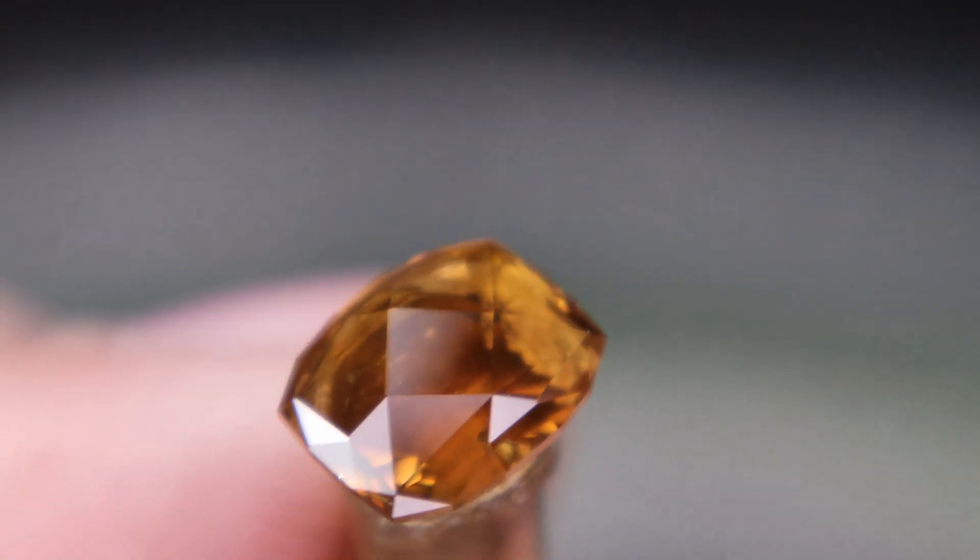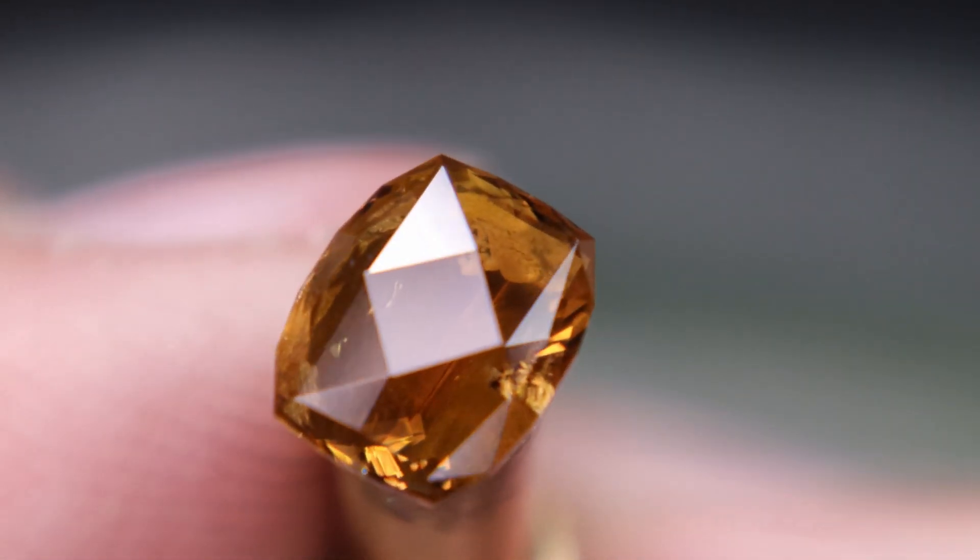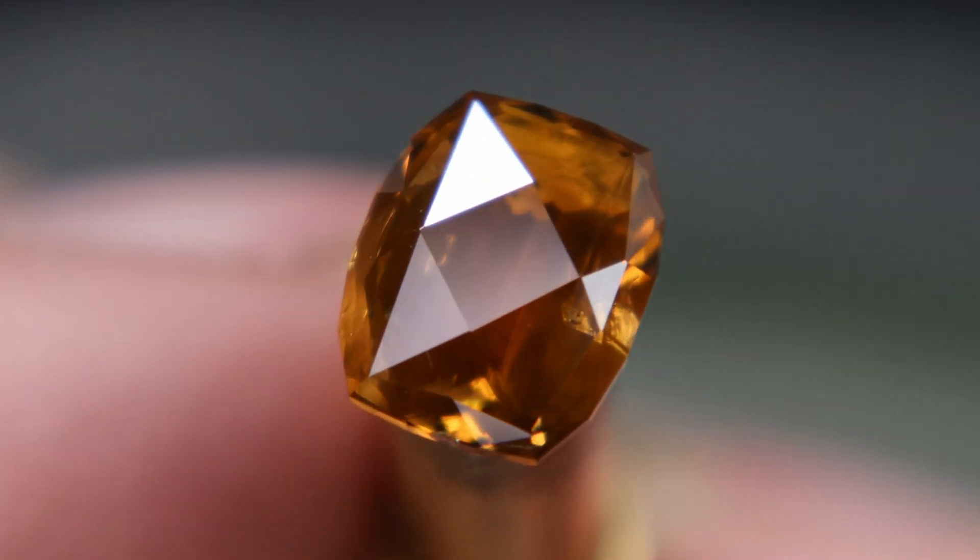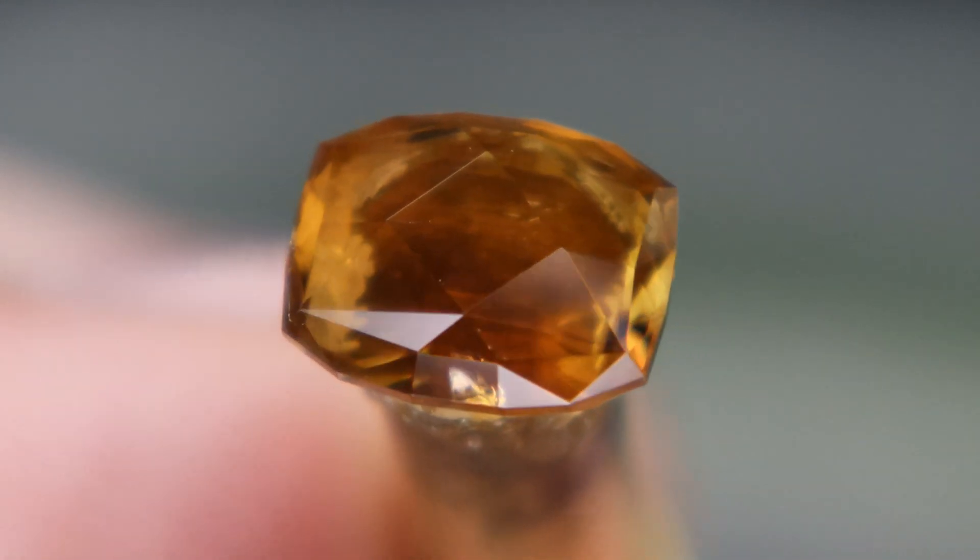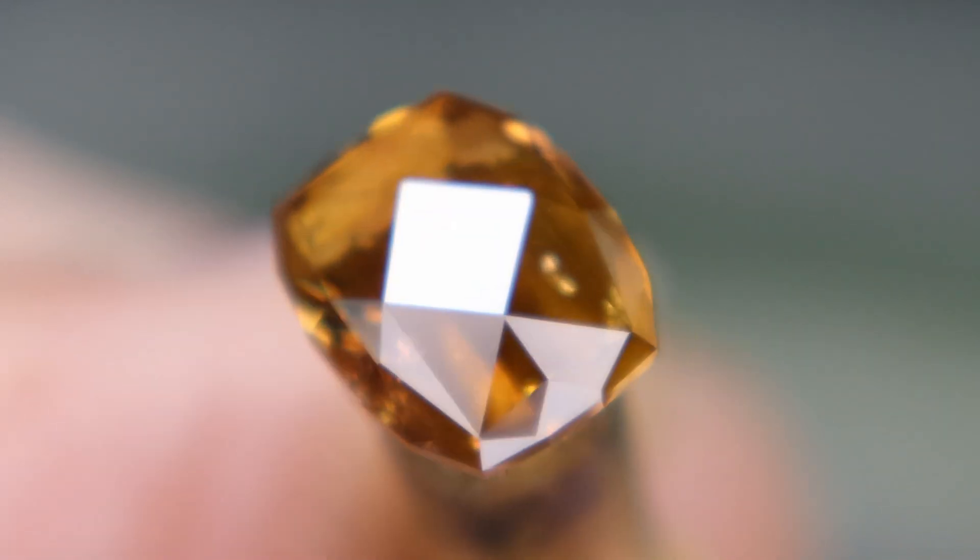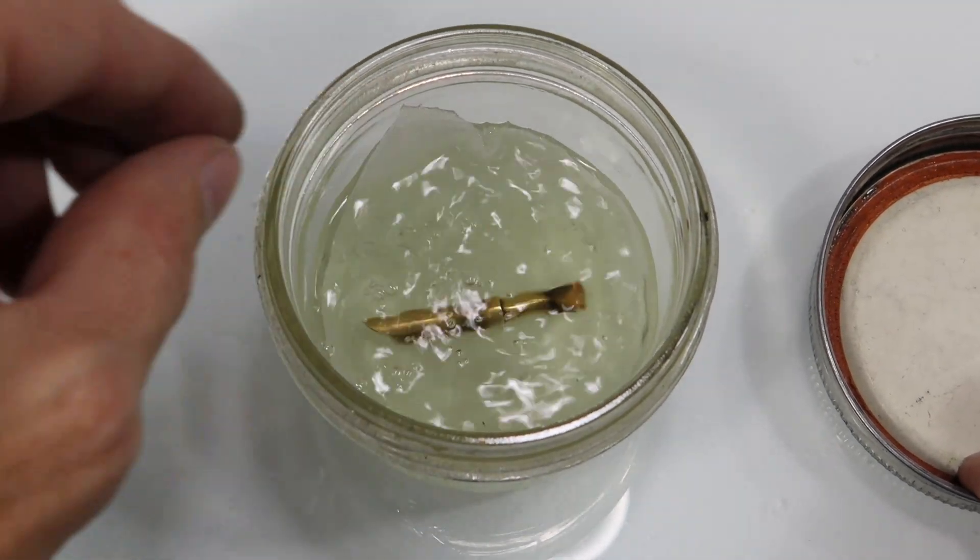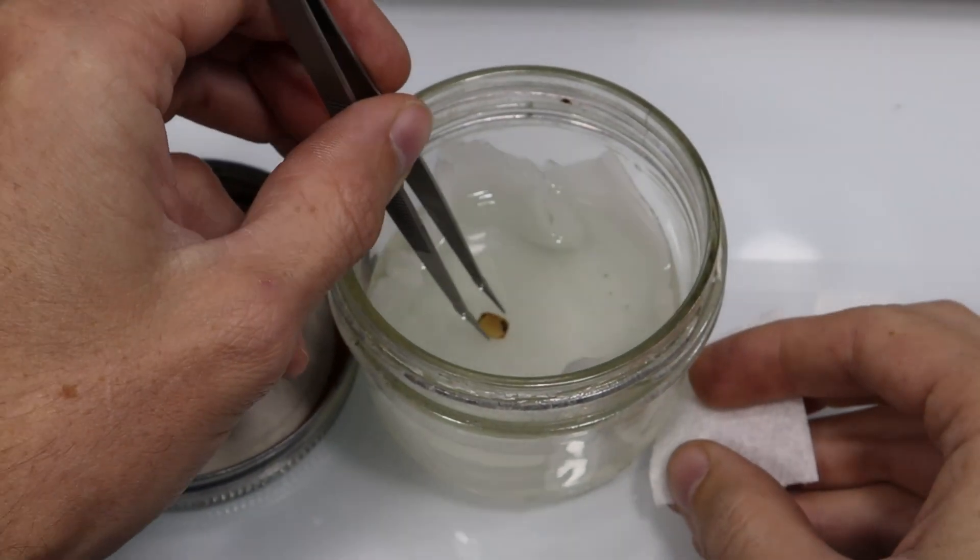The table meets up pretty well with the crown I designed and the polish looks good. So the stone is finished. To try and heat the stone off the dop stick would likely cause damage to the pavilion of the stone. So to avoid that, I soak the piece in acetone until all the super glue has dissolved. I can then finally see the finished piece.